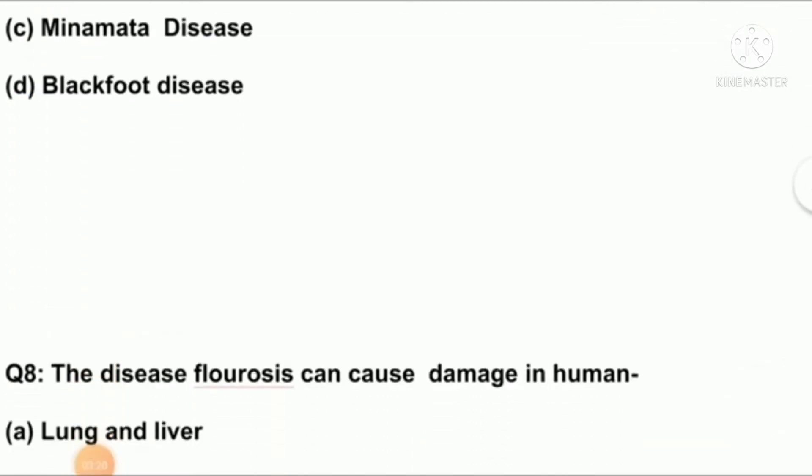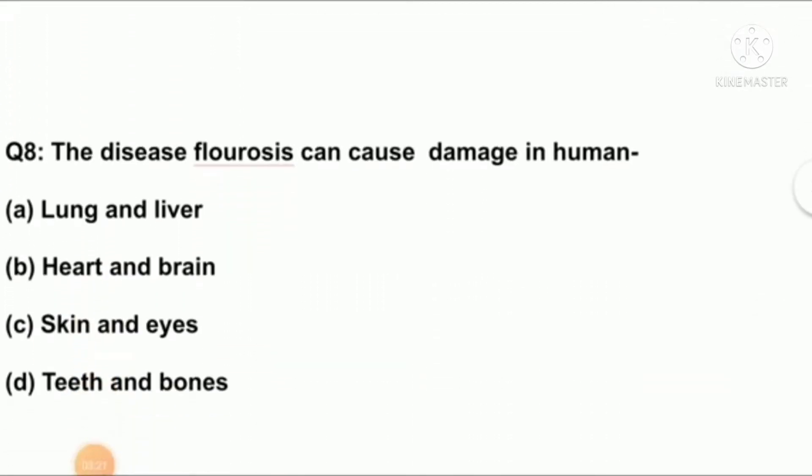Question number eight: the disease fluorosis can cause damage in humans. Option A: lung and liver, B: heart and brain, C: skin and eyes, D: teeth and bones. Right answer is option D: teeth and bones.